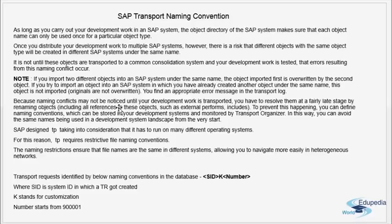It is not until these objects are transported to a common consolidation system and your development work is tested that the errors resulting from this naming conflict occur. When you transport objects carrying the same name, which were created in two different systems, to the same consolidation system, you will get naming conflict errors.